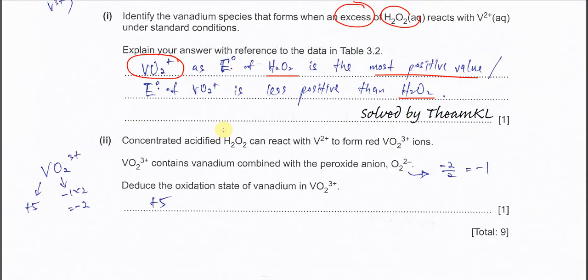Part 2. Concentrated acidified H₂O₂ reacts with V²⁺ to form the rare VO₂³⁺ ion. This question actually just wants you to deduce the oxidation state of vanadium in this ion. So oxygen is negative 2.